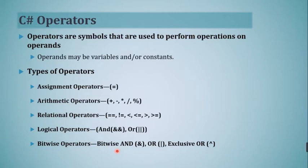Arithmetic operators are used to perform arithmetic operations such as addition, subtraction, multiplication, division, and modulo (remainder or quotient). The next type of operator is relational operators. These operators are used to check the relationship between two operands. If the relationship is true, the result will be true; otherwise the result will be false.